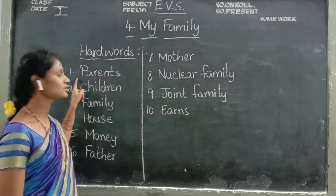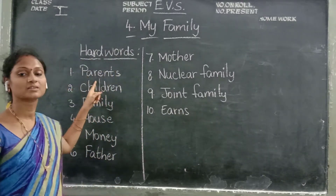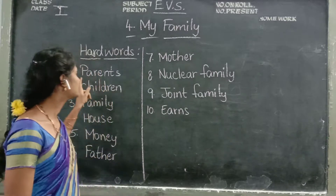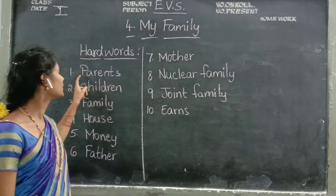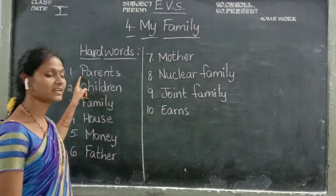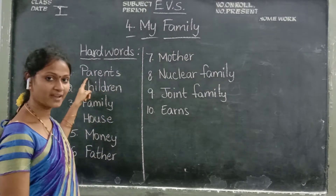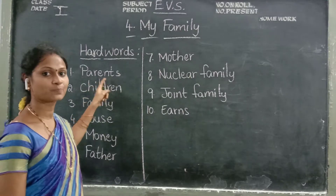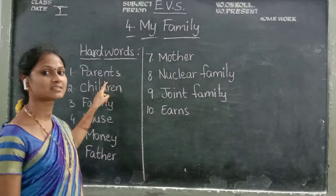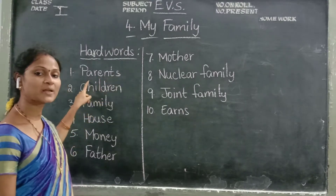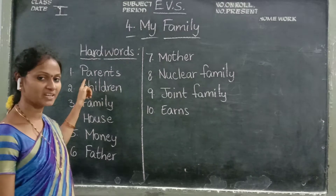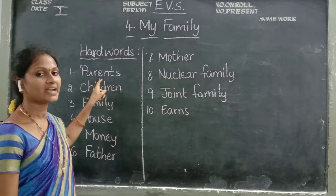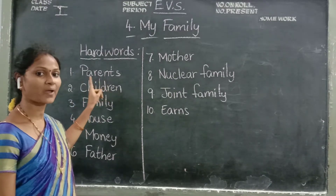The first one is 'parents'. What is the spelling of parents, children? Say it with me: P-A-R-E-N-T-S. Parents. What is the spelling of parents, children? P-A-R-E-N-T-S. Parents.